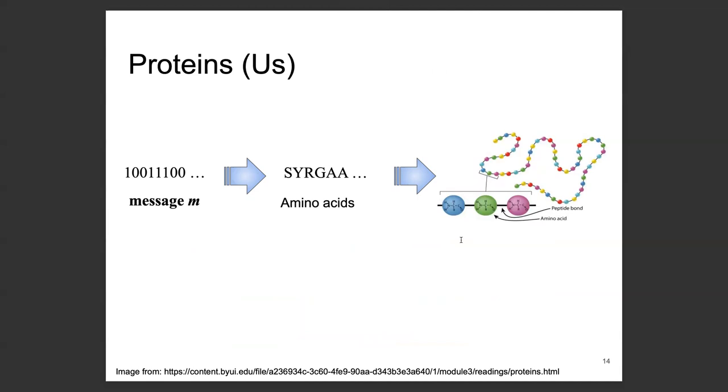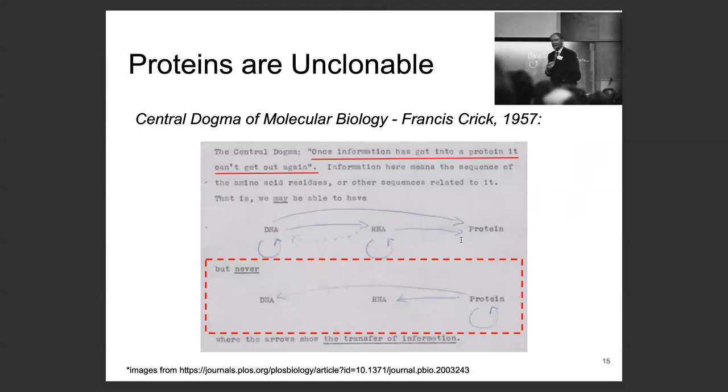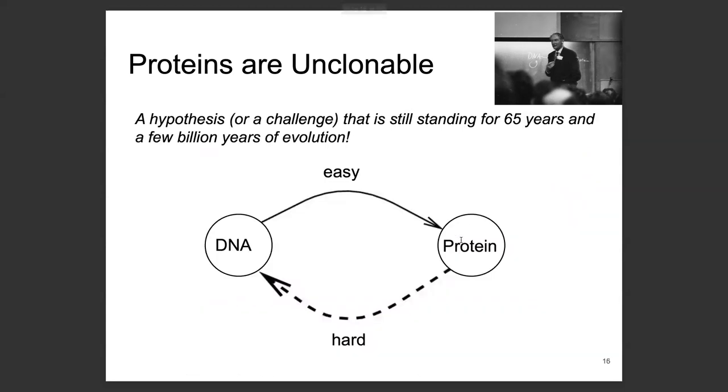This led us to consider another biological polymer. Proteins also can be used to store digital data. The digital message will be encoded into a sequence of amino acids, which are the basic building blocks of proteins, and then this sequence is synthesized into protein material. And here the magic started. First of all, proteins are unclonable. The central dogma of molecular biology states that once information has got into a protein, it can't get out again. So given a protein sample, we cannot replicate it or get the genetic information out of it. This challenge is still standing for 65 years and even for billions of years of evolution. To us cryptographers, this is a biochemical one-way function. And we know what to do with hardness assumptions. We turn hard lemons into lemonade.